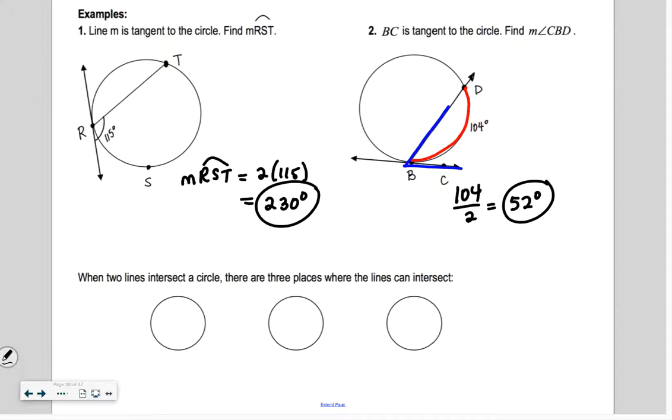But we're going to talk about a formula and this formula is kind of weird. It says when two lines intersect inside a circle or intersect a circle, there are three places where the lines can intersect. Our lines could intersect inside of the circle. The lines could intersect outside of a circle or the lines can intersect on the circle. And we've dealt with the on the circle ones. Those are the inscribed angles.